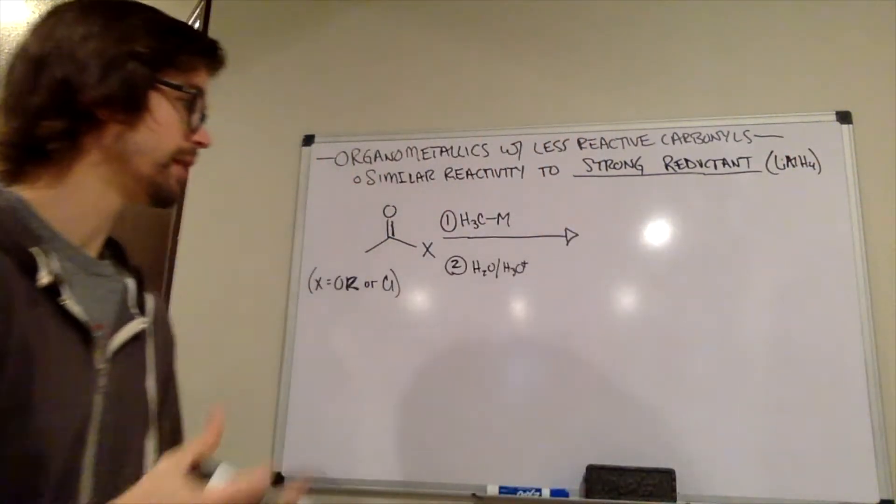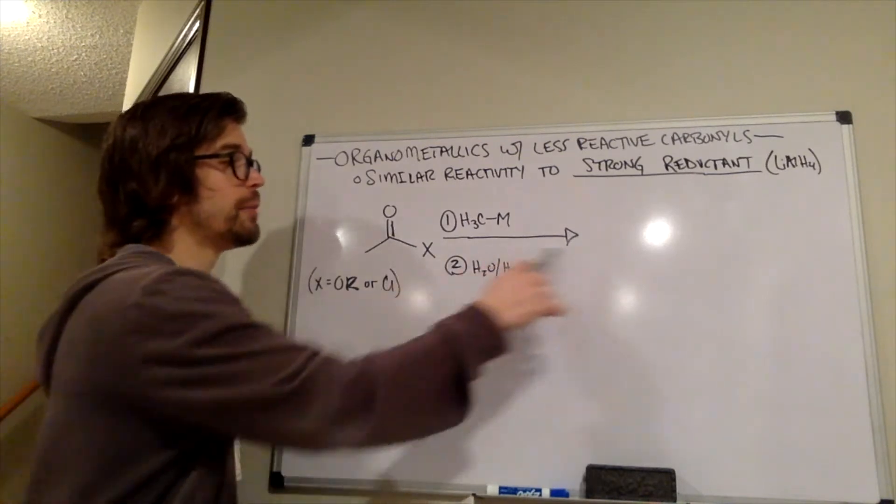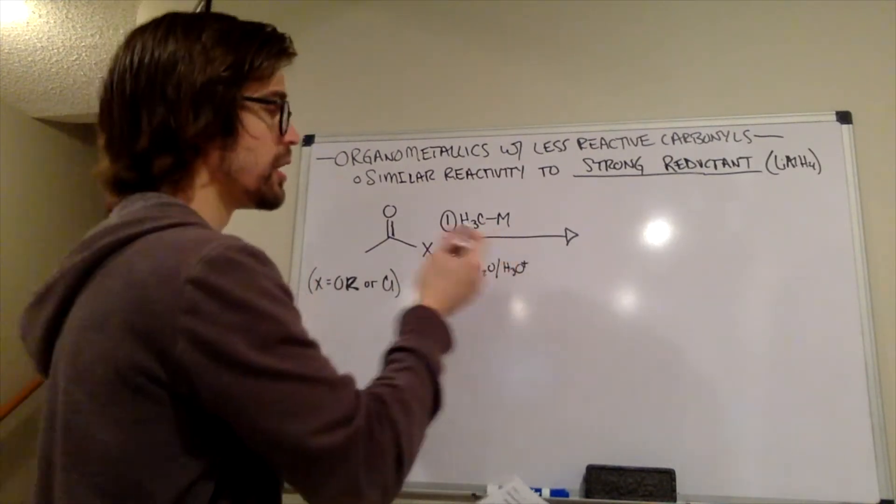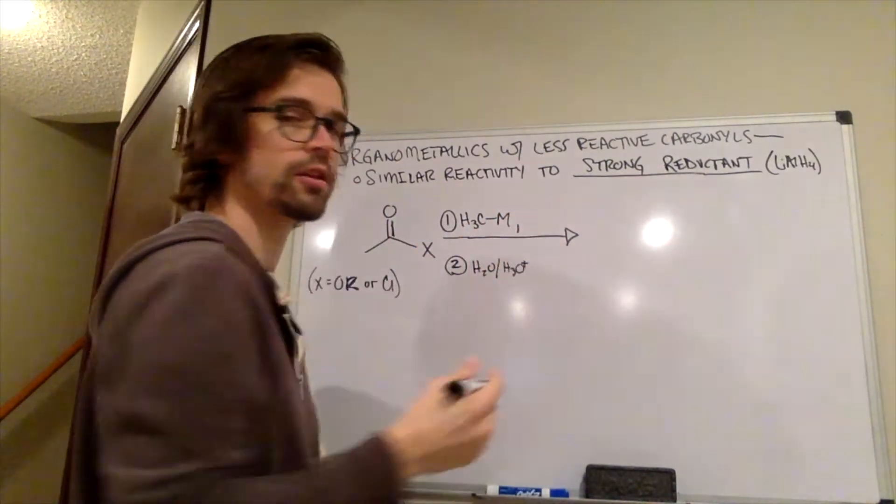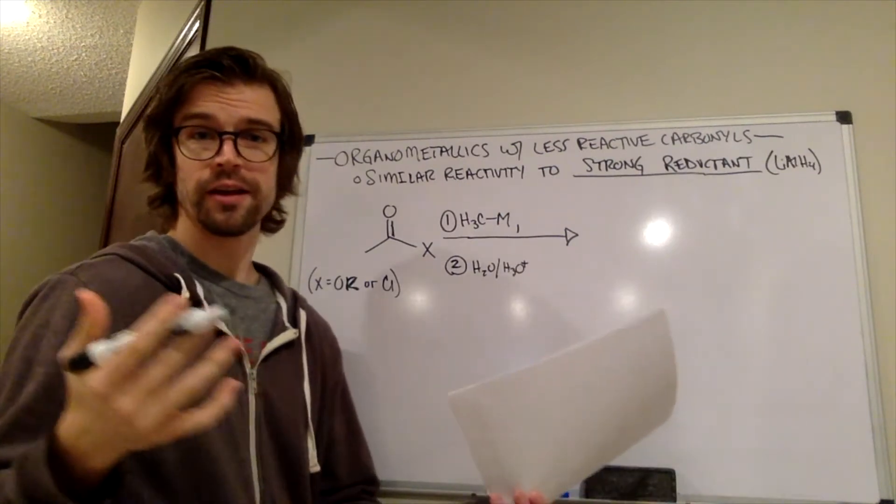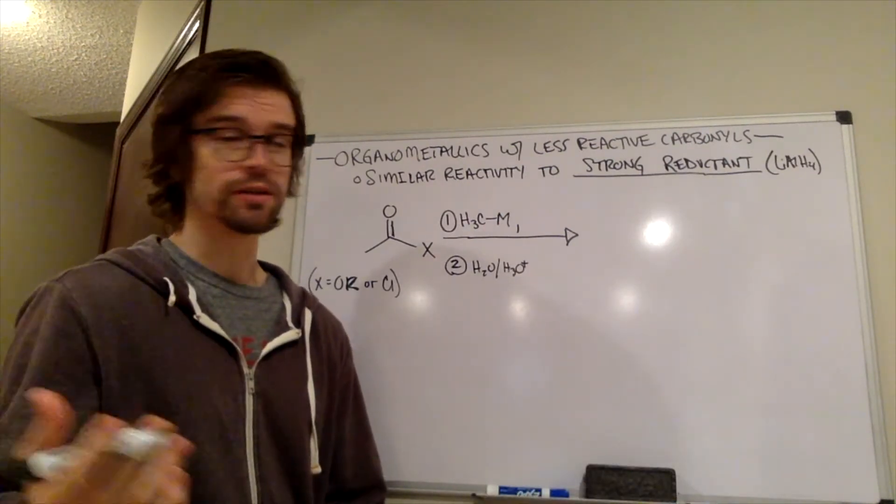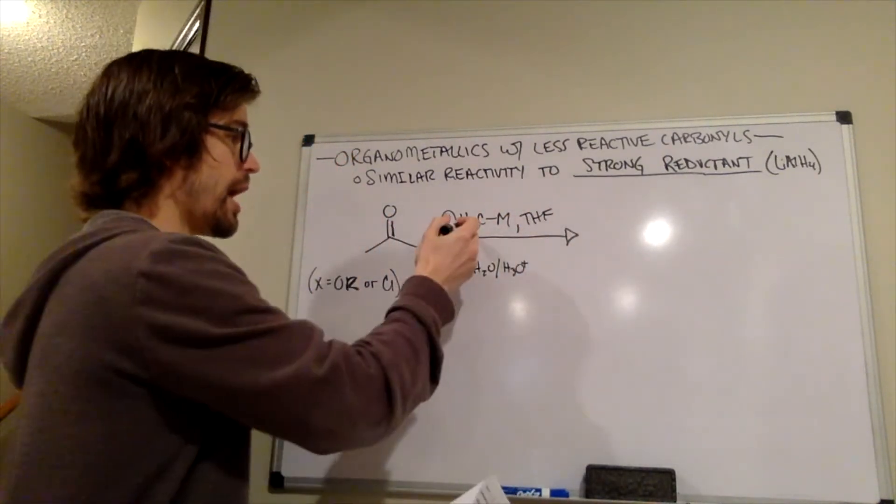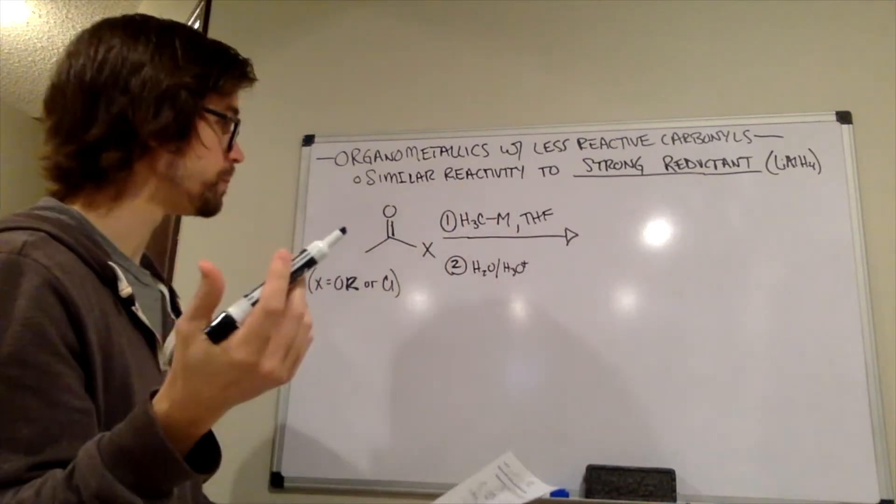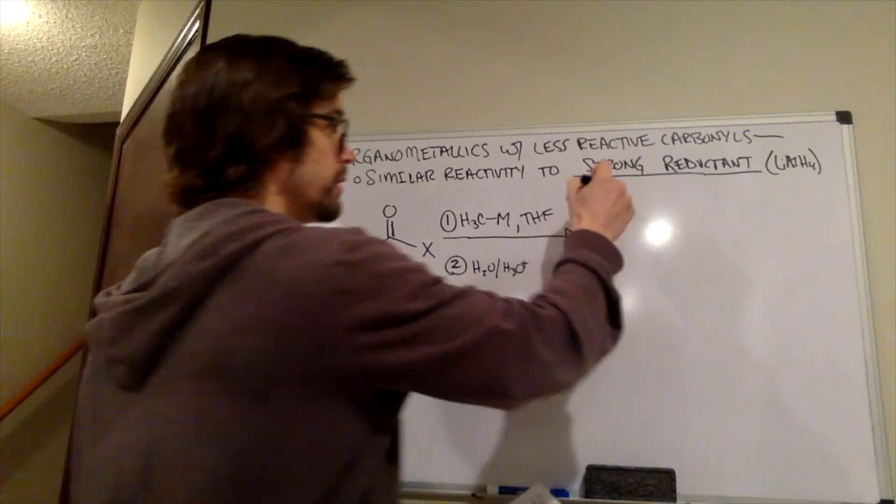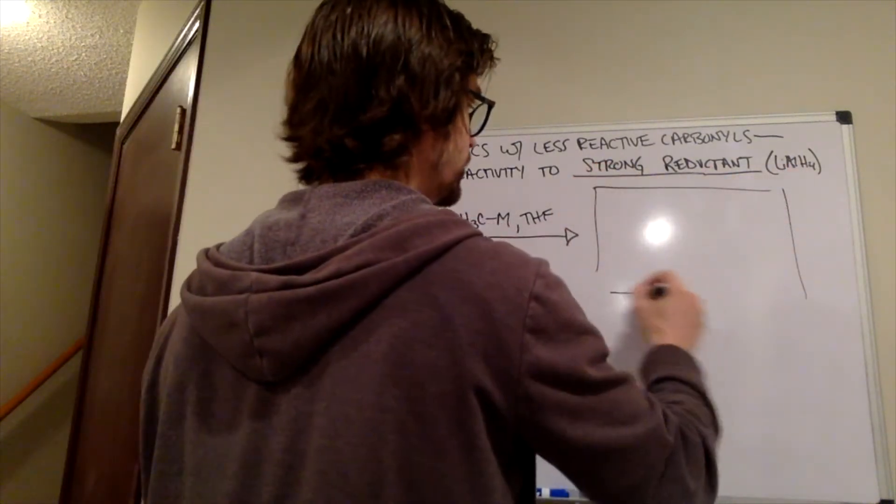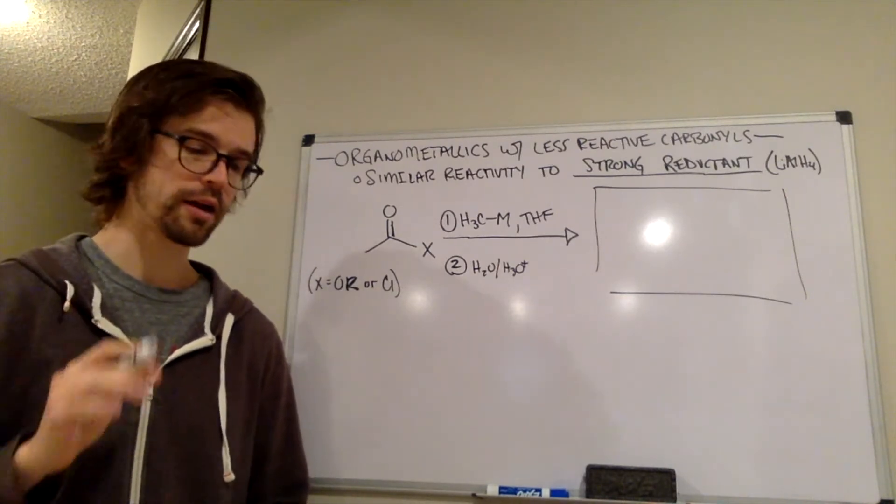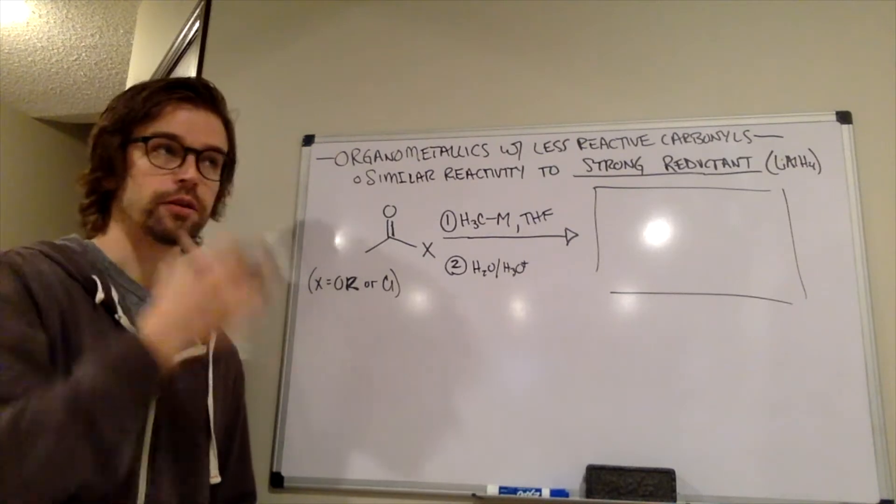So I think that at this point, you guys probably should be able to predict the product of this reaction. If we have an organometallic, this metal could be a lithium, could be a magnesium bromide. With either of those, what do we have to have? Also on this arrow, we have to have this solvent. So we could have THF. And we have an excess of this. So go ahead and try to predict the product. Draw some arrows for the mechanism and try to predict the product. So pause it, try that, and then restart the video.